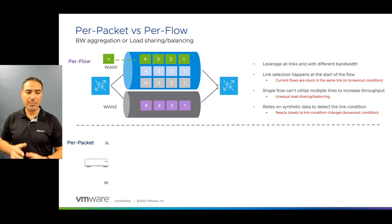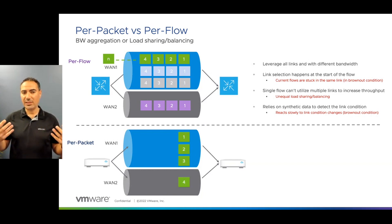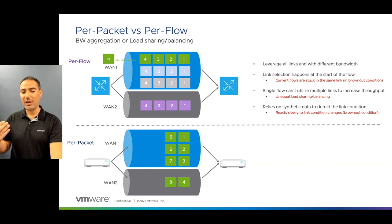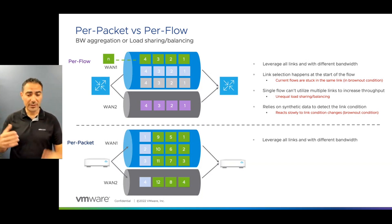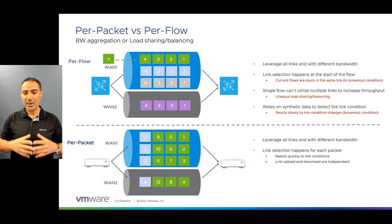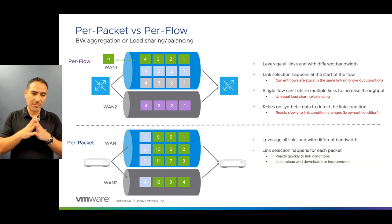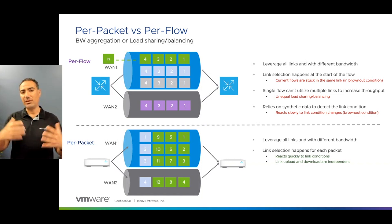On the other side, per-packet works differently. When a flow is received by the SD-WAN device, the device takes the flow and divides the data across all circuits, packet by packet, and keeps doing so for the whole entire flow. Subsequent flows follow the same pattern. Similar to per-flow, it leverages all the links between source and destination. However, link selection happens at each packet, which gives a major advantage: it reacts quickly to link condition changes, because these devices rely on actual data per packet to measure link condition, giving the device a faster way to discover any brownout and move the next packet to the other circuit immediately.